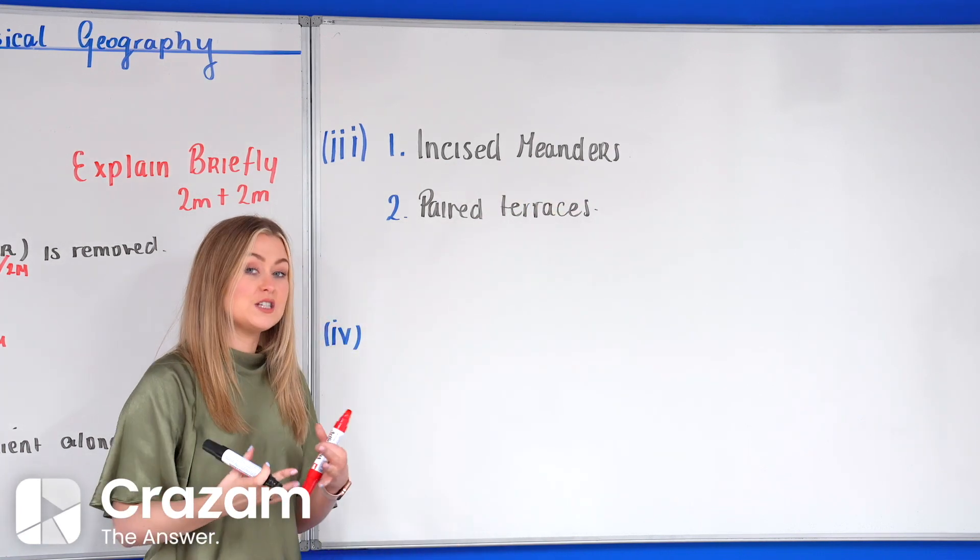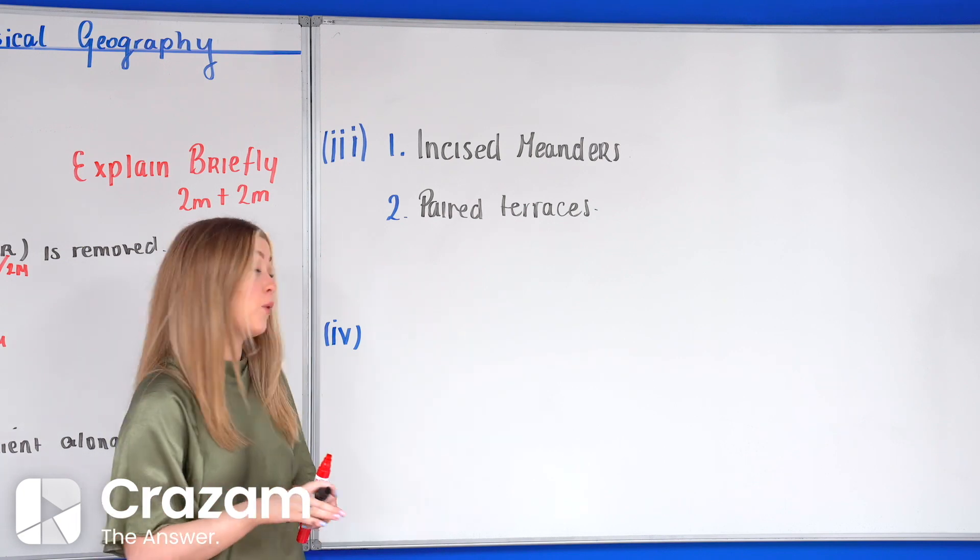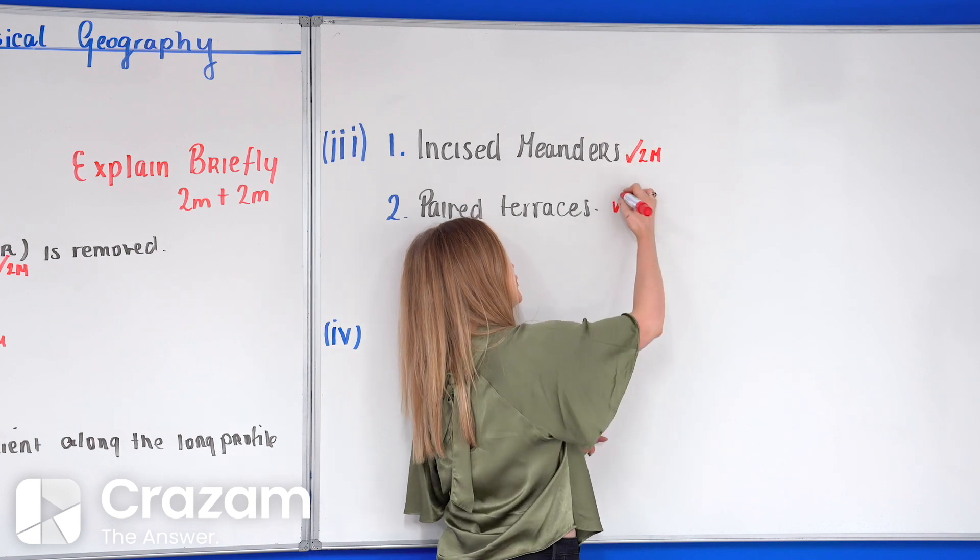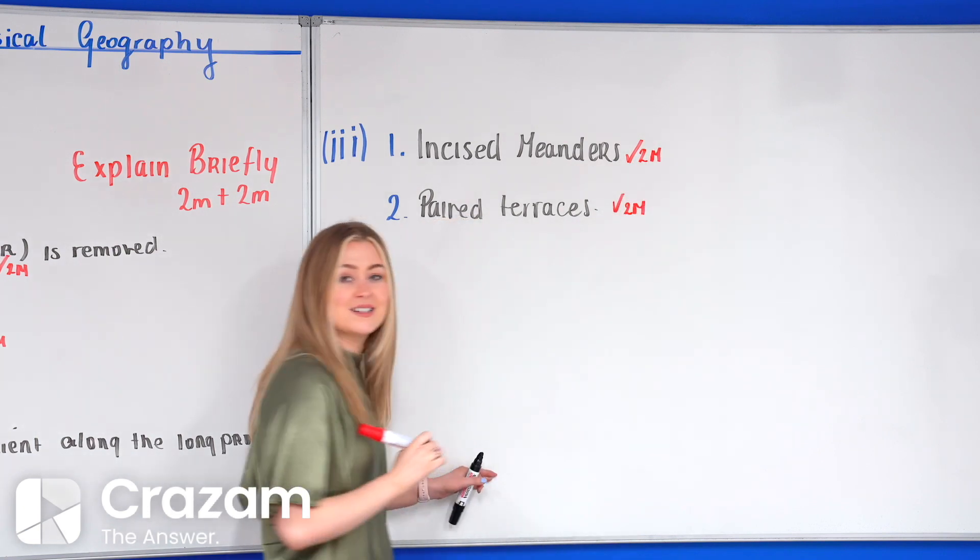We're going to pick incised meanders and paired terraces. Now it's really important to know these features and actually be able to identify what they look like. So here marking scheme wise we're going for two marks plus two marks. So four marks in total here.